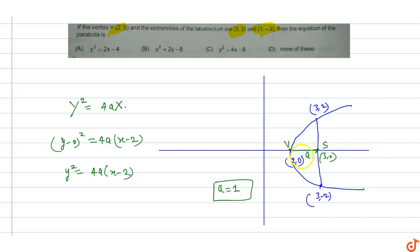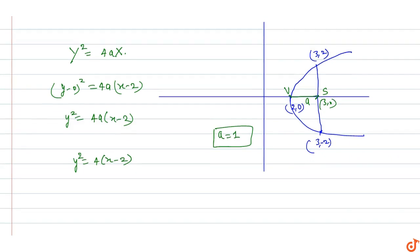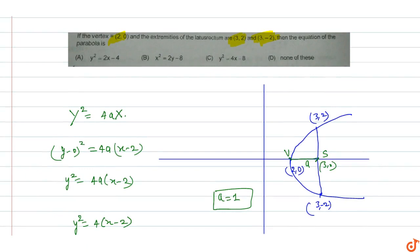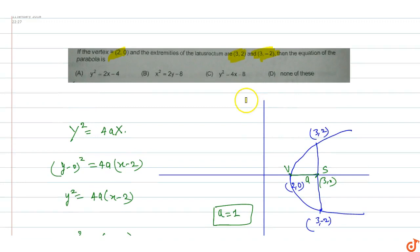With a = 1, the equation becomes y² = 4(1)(x-2), which equals 4x - 8. So the equation of the parabola with vertex (2,0) and extremities of latus rectum at (3,2) and (3,-2) is y² = 4x - 8. Option C is the correct answer.